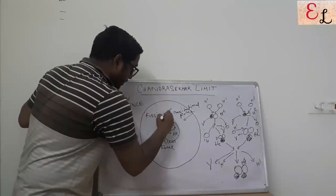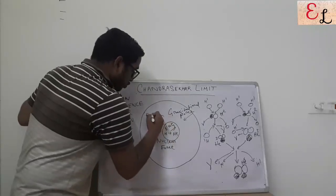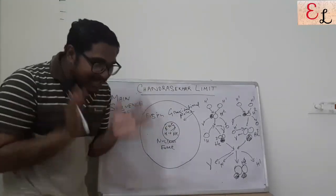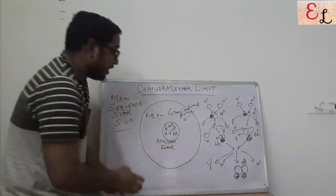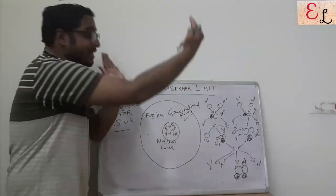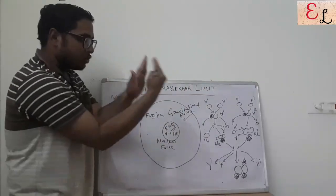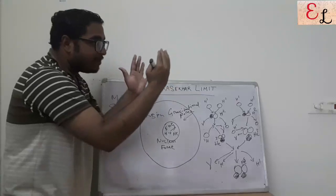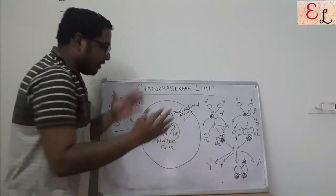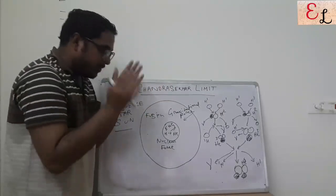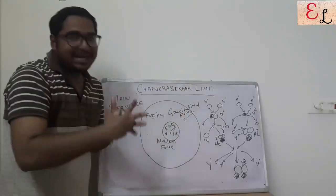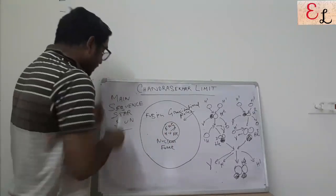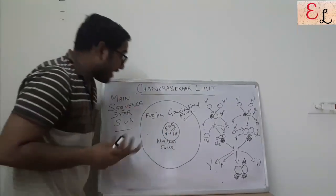The fusion reaction is one of the processes taking place within the core of the sun. This fusion reaction creates high temperature and high pressure energy, which creates an outward force that balances the entire gravitational force and prevents the gravitational collapse of the sun. Otherwise, the surface of the sun would have decreased slowly in diameter. Once the reaction would stop, gravitational collapse would happen because the gravitational force would exceed the nuclear force. But the sun, being a main sequence star, has balanced this gravitational force through thermal pressure energy.